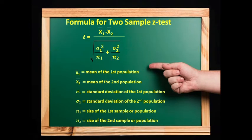Formula for two-sample Z test: Z = (x̄₁ - x̄₂) / √(σ₁²/n₁ + σ₂²/n₂), where x̄₁ is the mean of the first population, x̄₂ is the mean of the second population, σ₁ is the standard deviation of the first population, σ₂ is the standard deviation of the second population, n₁ is the size of the first sample, and n₂ is the size of the second sample.